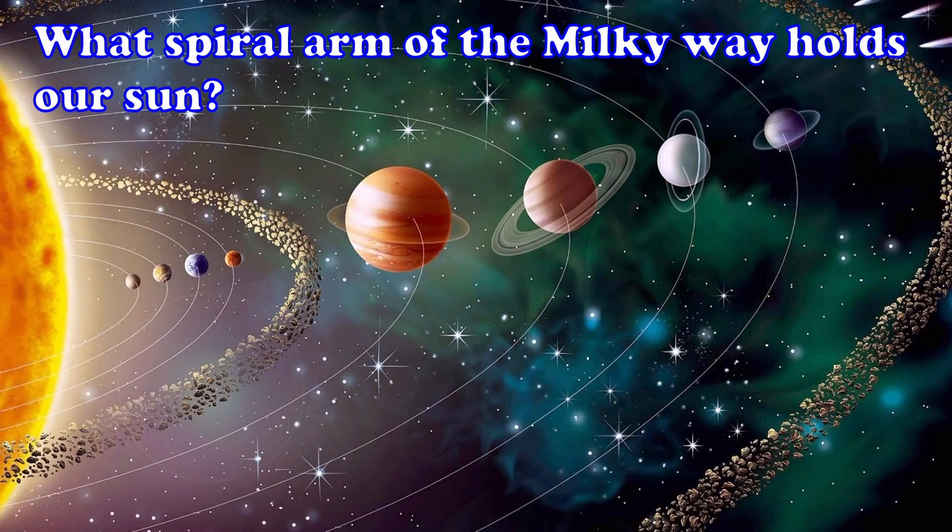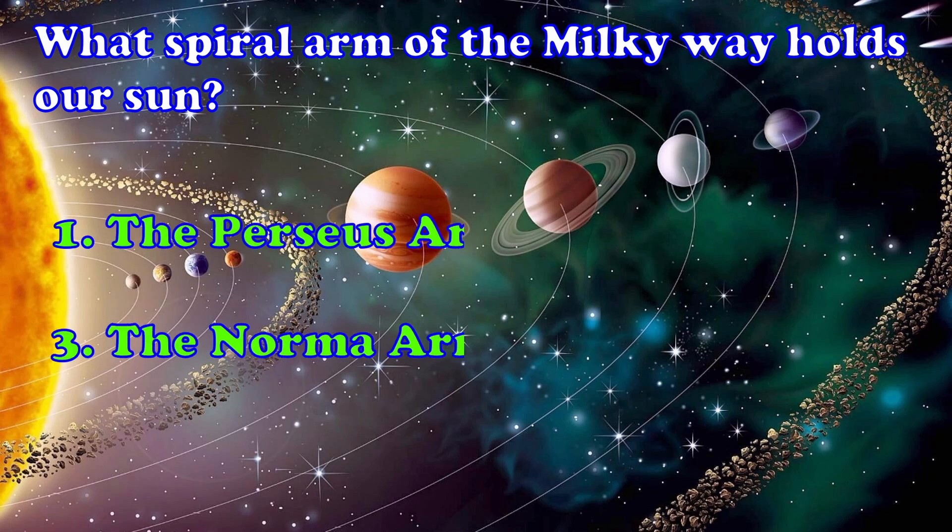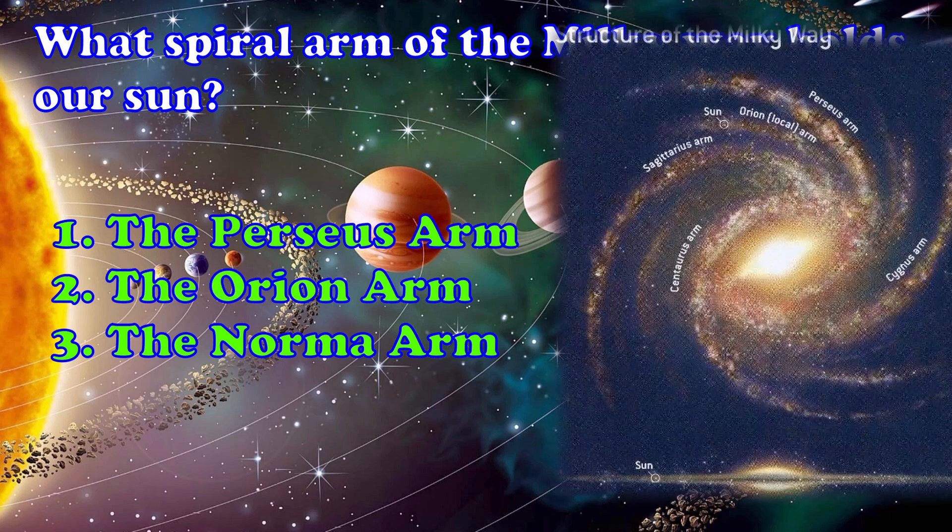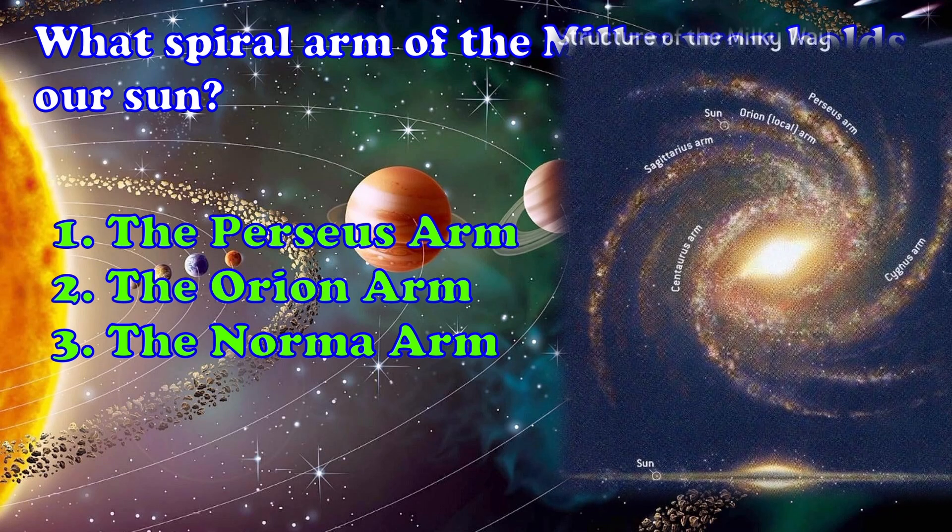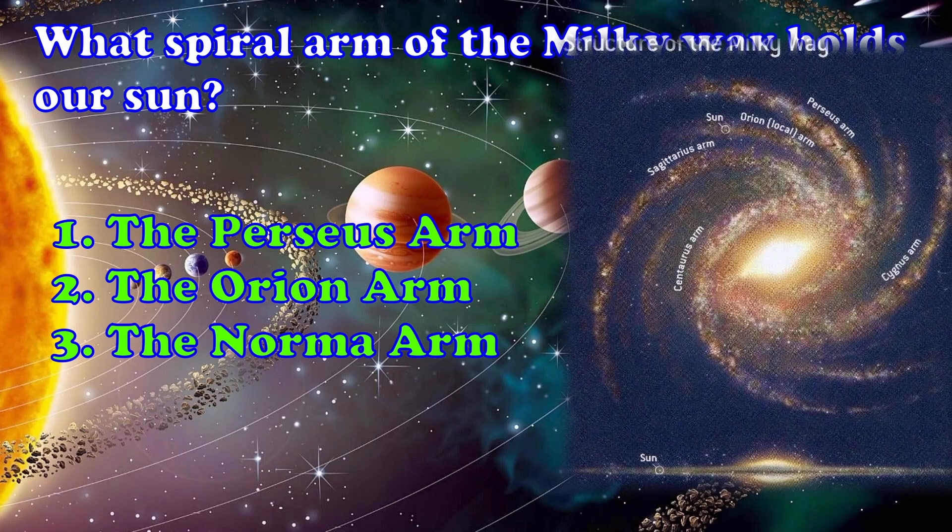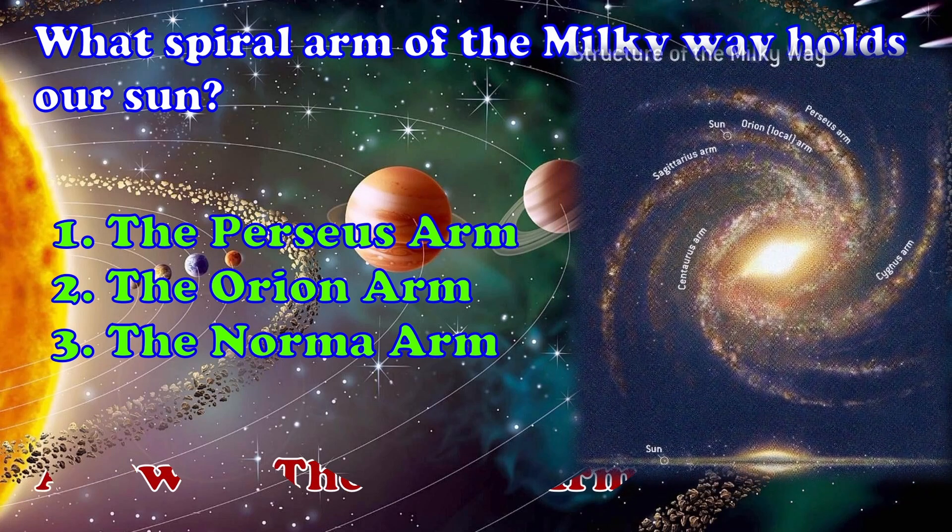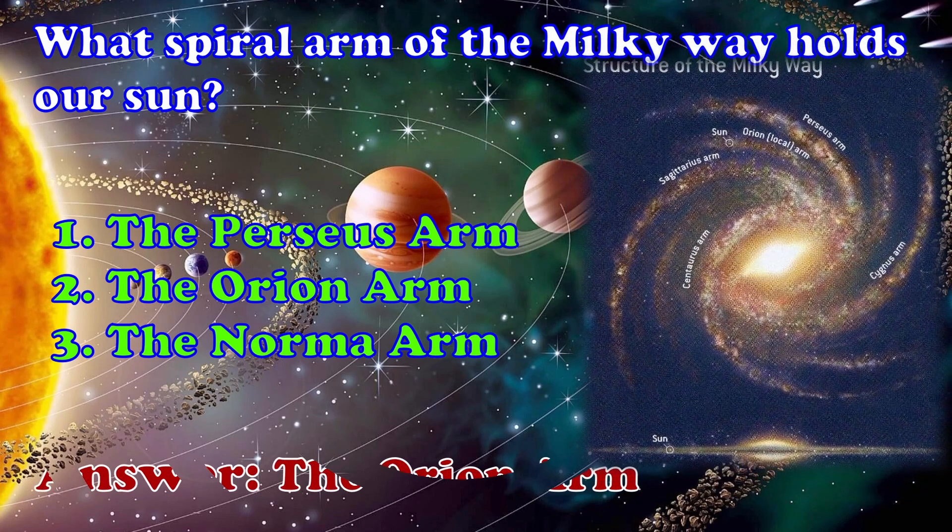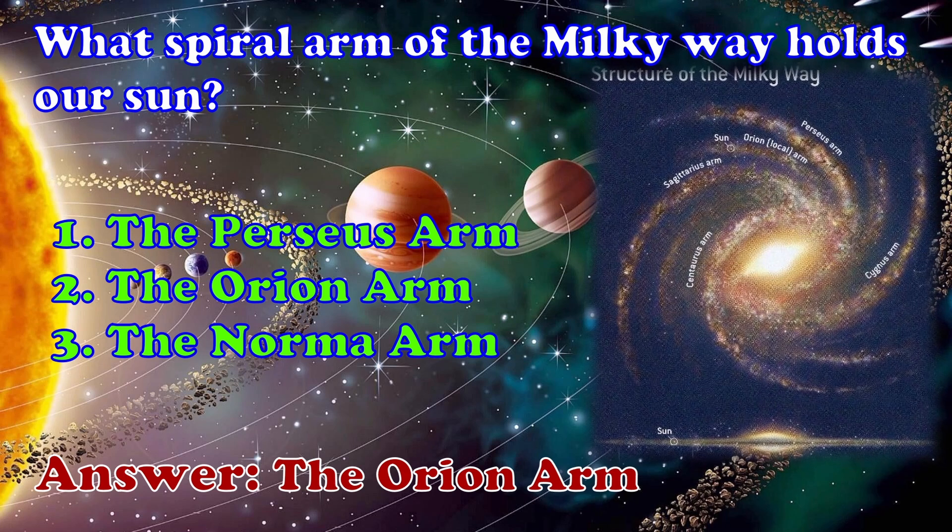What spiral arm of the Milky Way holds our Sun? 1. The Perseus Arm 2. The Orion Arm 3. The Norma Arm. Answer, The Orion Arm.